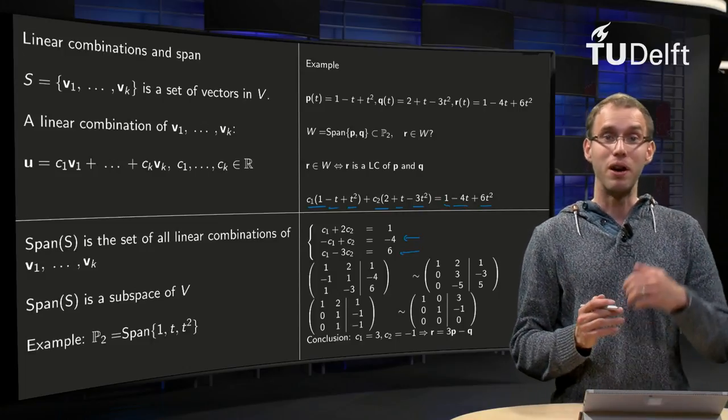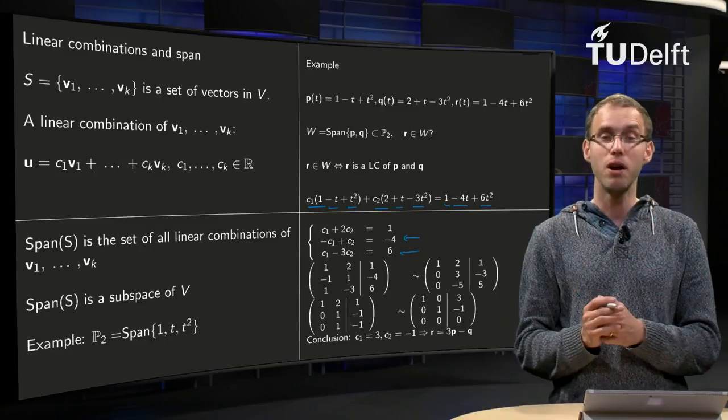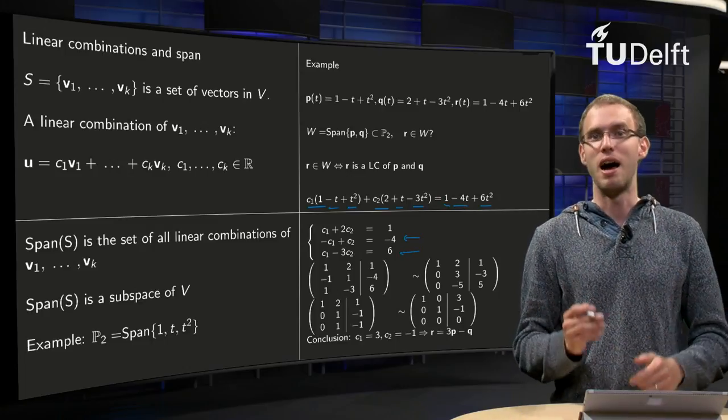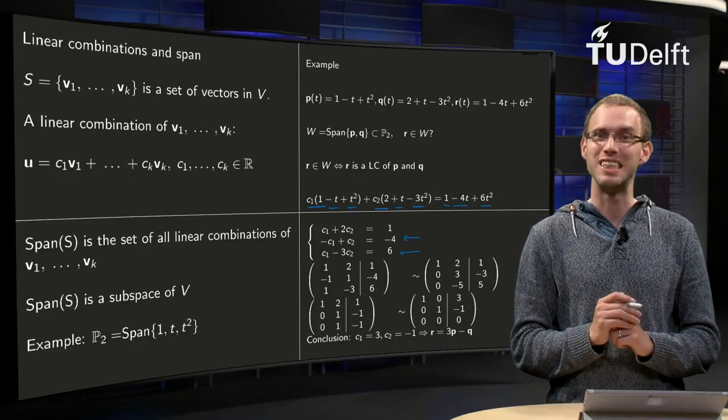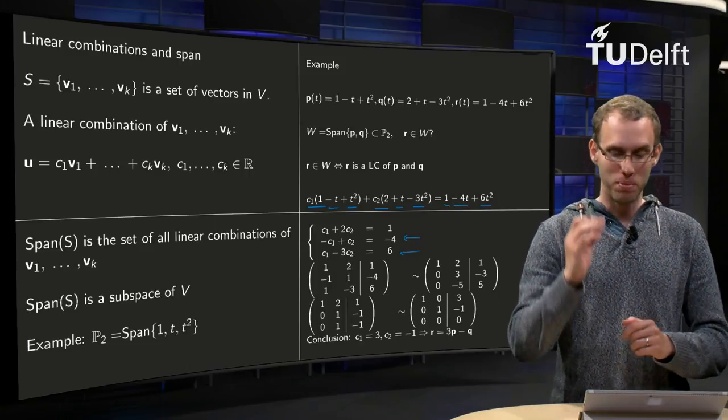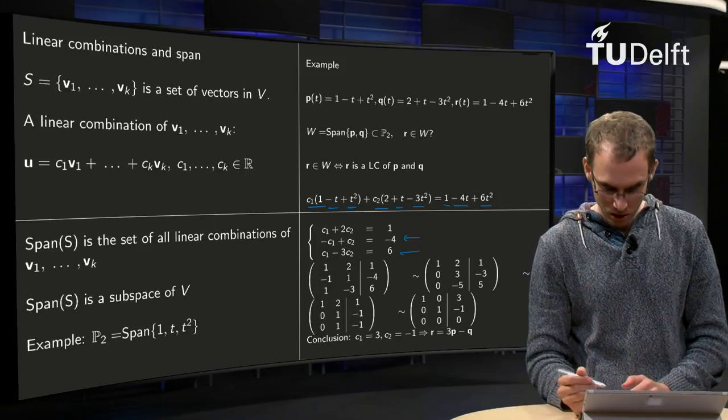So what do we have now? We have three equations in three unknowns—a linear system. But we know how to deal with linear systems: row reduction. So we form the augmented matrix and start our row reduction.